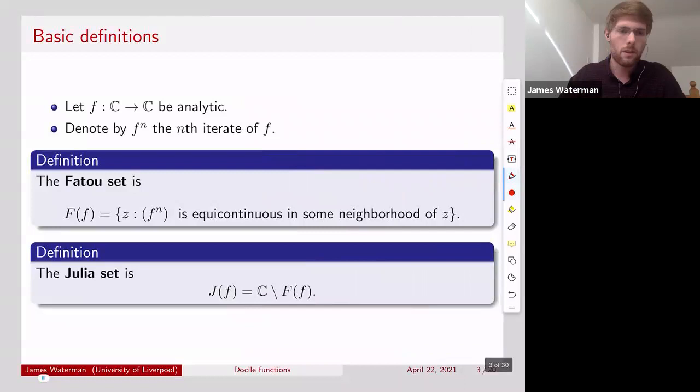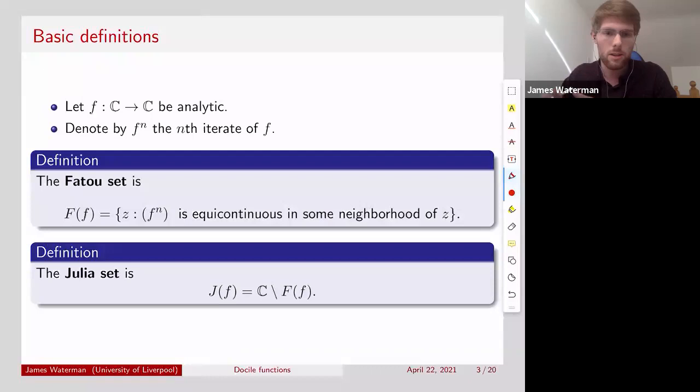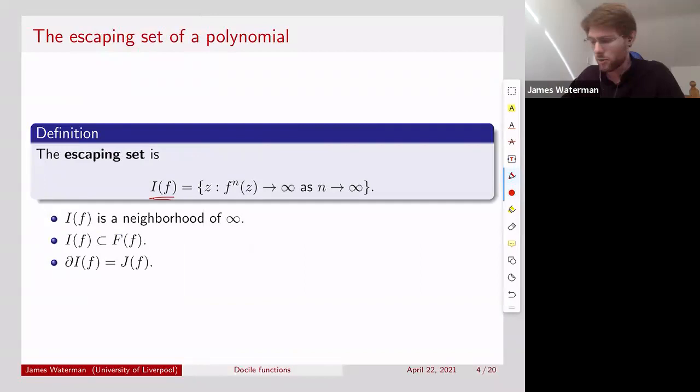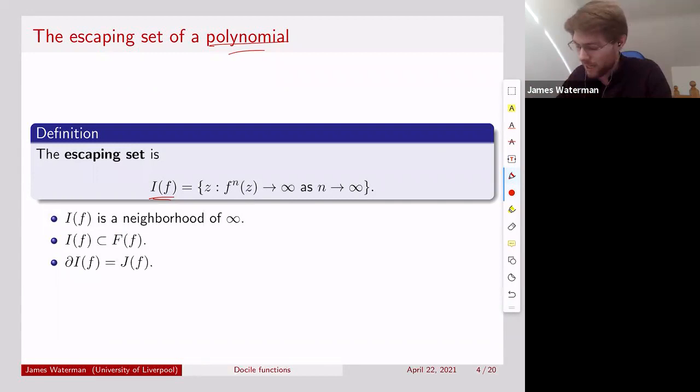So for our basic definitions, we're going to have F analytic, and we denote by F to the n the n-th iterate of F. The complex plane nicely splits up into the Fatou set and the Julia set, which is its complement. We also have the escaping set, denoted by I of F. These are the points on the complex plane for which the iterates tend to infinity. For a polynomial, the escaping set is a nice neighborhood of infinity, it's in the Fatou set, and most importantly for us, the boundary of the escaping set is the Julia set.